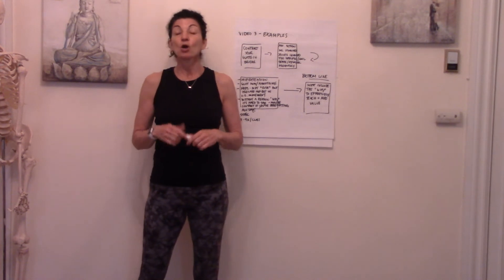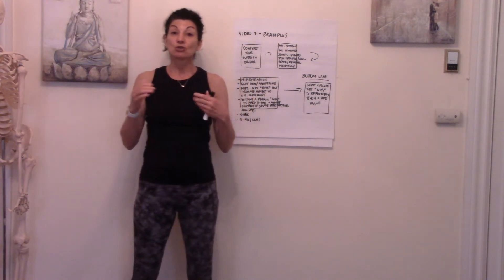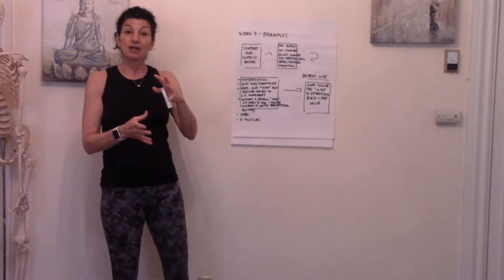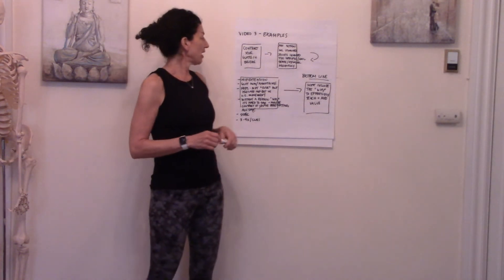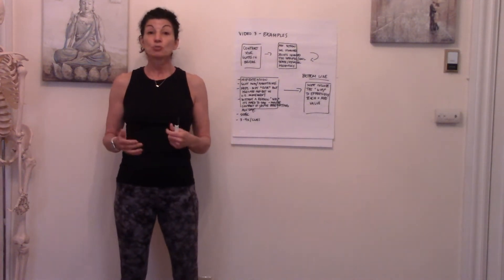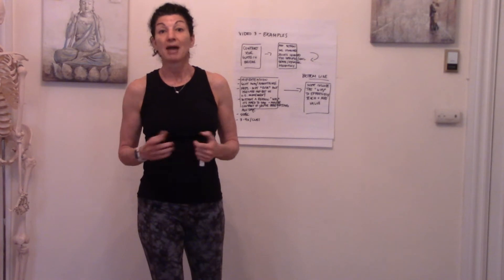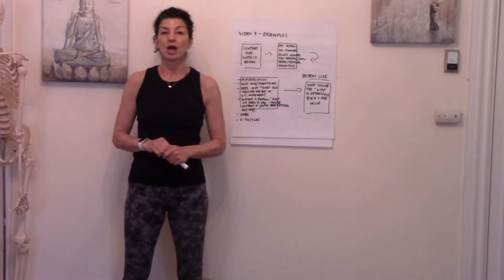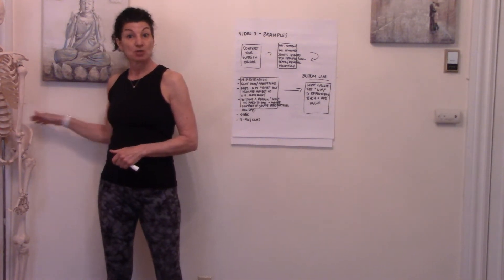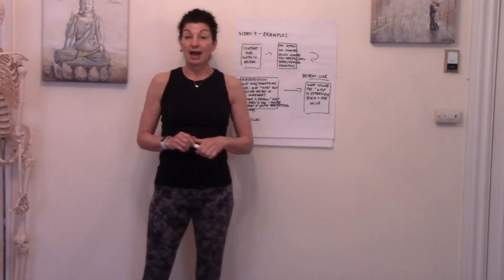I referred to an example in the second video and we're going to dive into it a little bit more, stick it through that cues evaluation machine, and start to apply all those different things in the evaluation process to the cue. The cue I've got here is: 'contract your glutes in bridge.' In bridge pose, let's say I had students coming into bridge and I said, 'I want you to contract your gluteus maximus.'